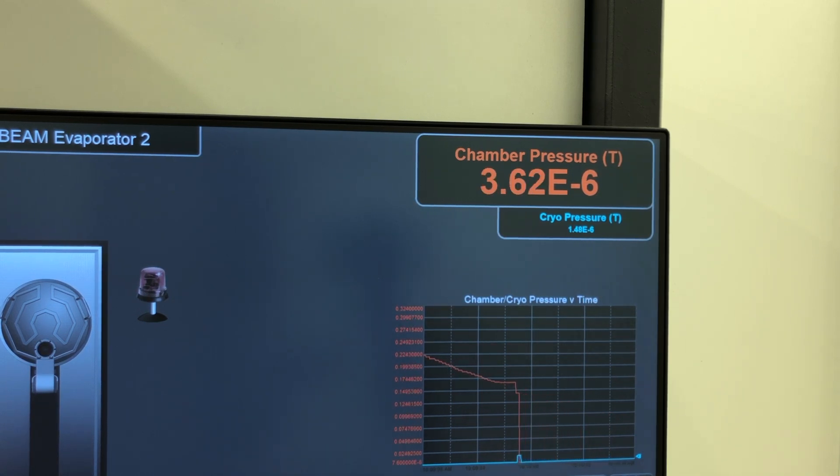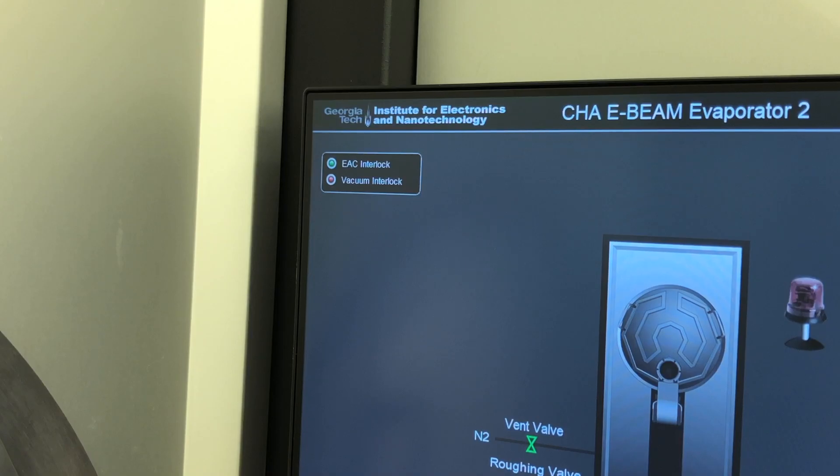However, if you are not concerned with the deposition quality, you can start the process at a higher pressure. The machine, however, will not allow you to start your process until it reaches a certain minimum vacuum level.